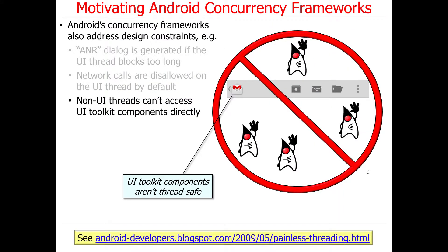Yet another constraint: non-user interface threads — threads that are not the specific UI thread — can't access UI toolkit components directly. So they can't access dialogs, widgets, menus, and buttons. You can only access those widgets and toolkit components from the specific user interface thread. The reason for this is that these UI toolkit components are not thread-safe; they're not designed to be accessed by anything other than one thread of control.